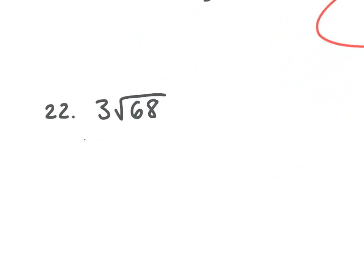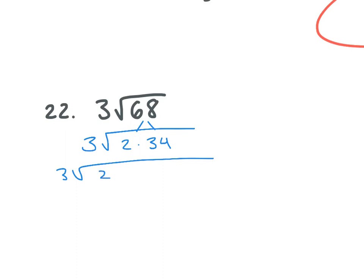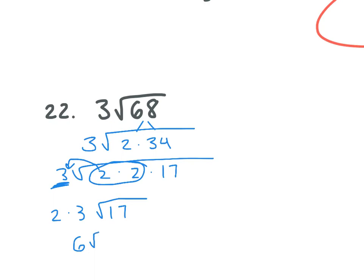Number 22 — how can we simplify 3 square root of 68? We break 68 into 2 and 34, then 34 into 2 times 17. Can we simplify 17? No. Do we have any pairs? Yes — a pair of 2s. So we take out one 2. We already have a 3 on the outside, so we multiply 2 by 3 to get 6. What's left on the inside is 17. So we get 6 square root 17. Remember: if it has a coefficient on the front, multiply whatever you take out with that coefficient.